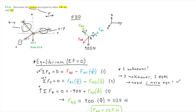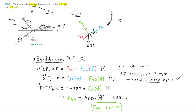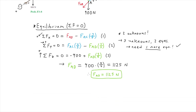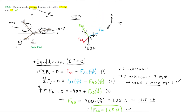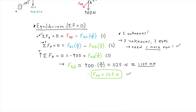The tension in cable AD can also be written as 1.125 kilonewtons. Now we just need to find the tensions in cables AB and AC. Looking at our set of equations, we can plug in the value of FAD into equation 2 to solve for FAC, substituting equation 3 into equation 2.